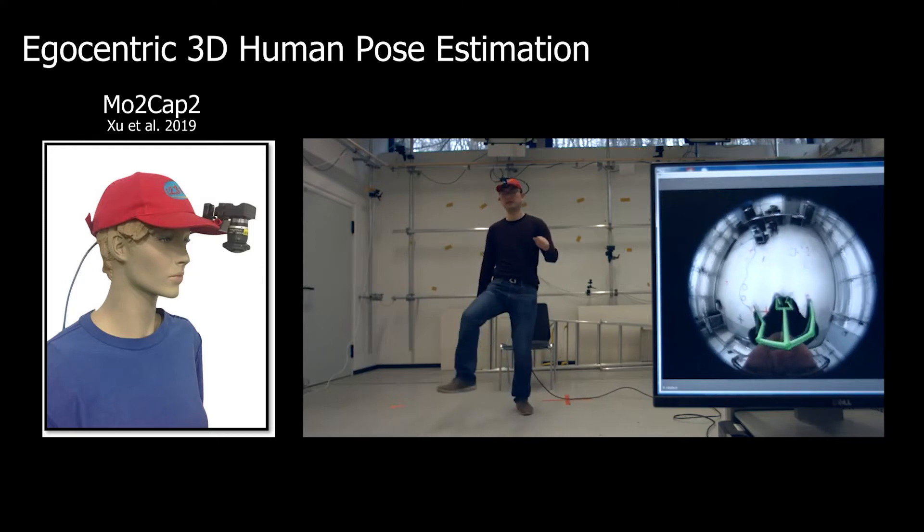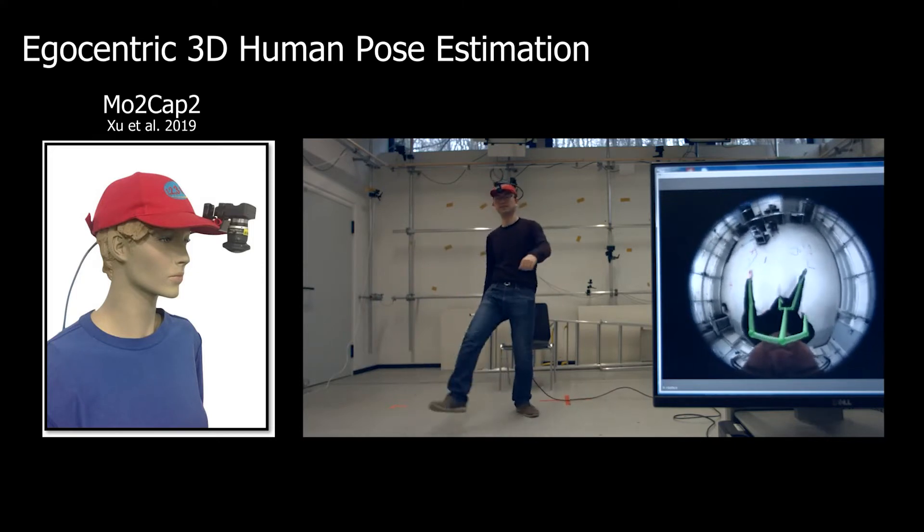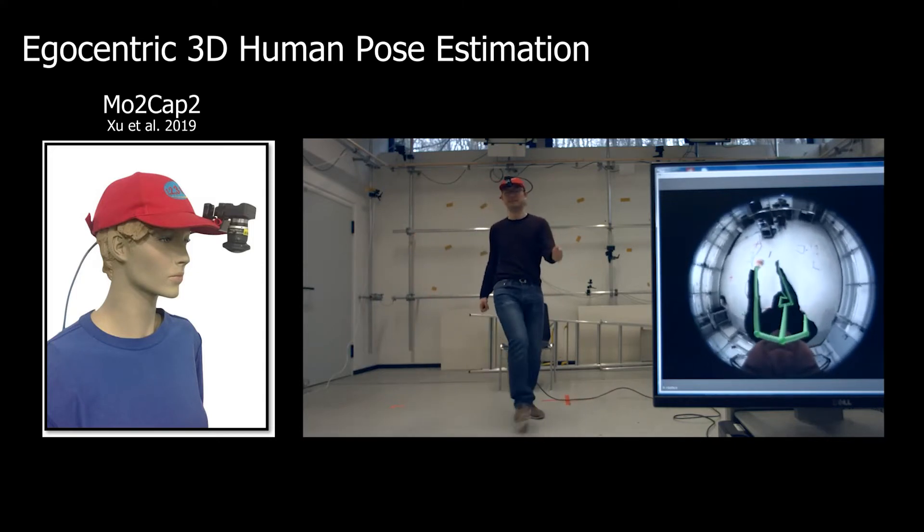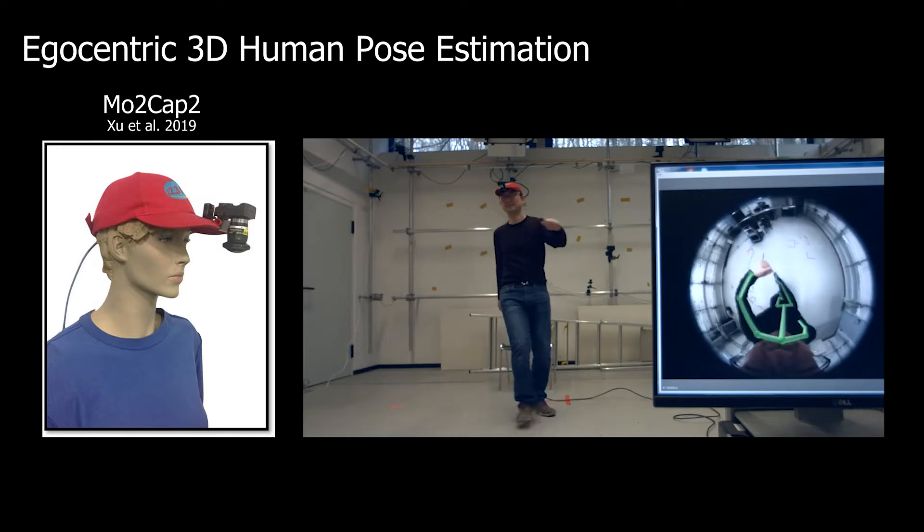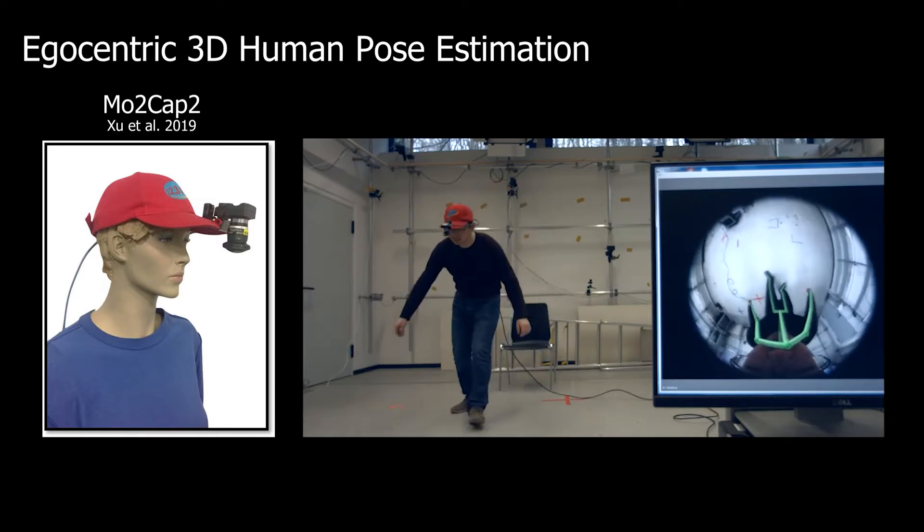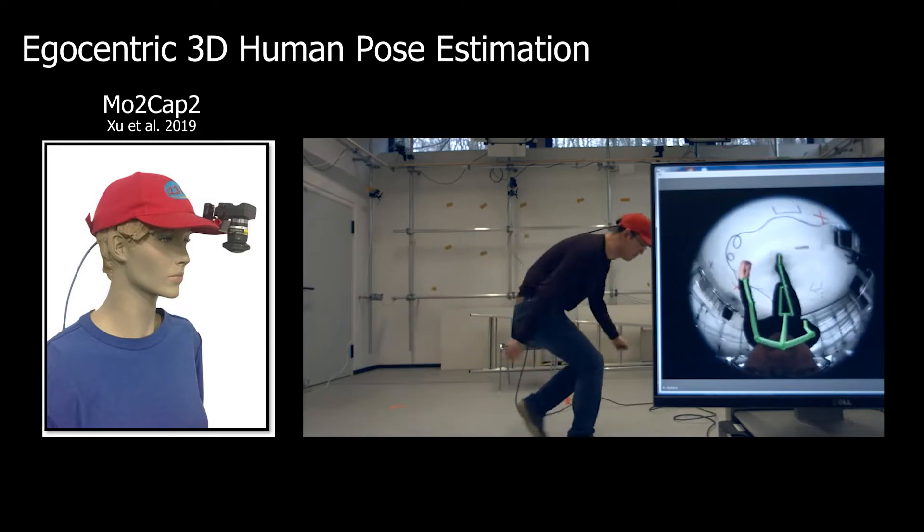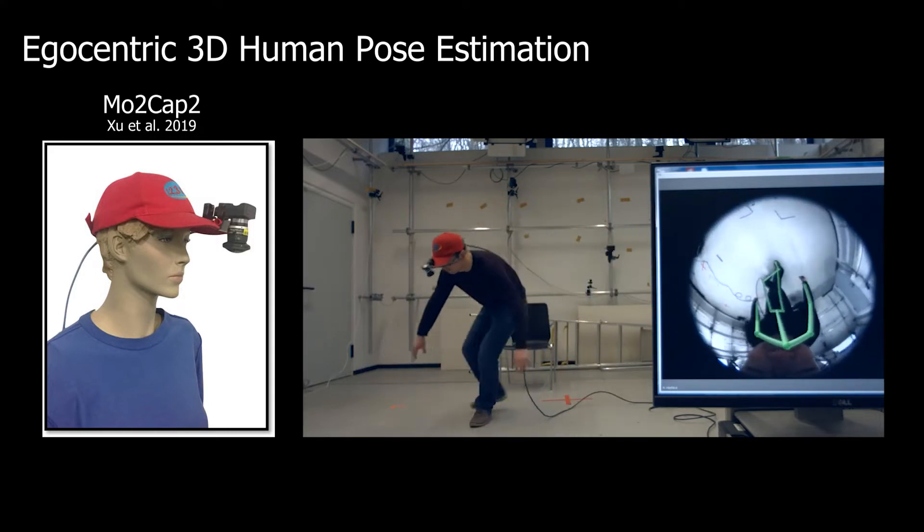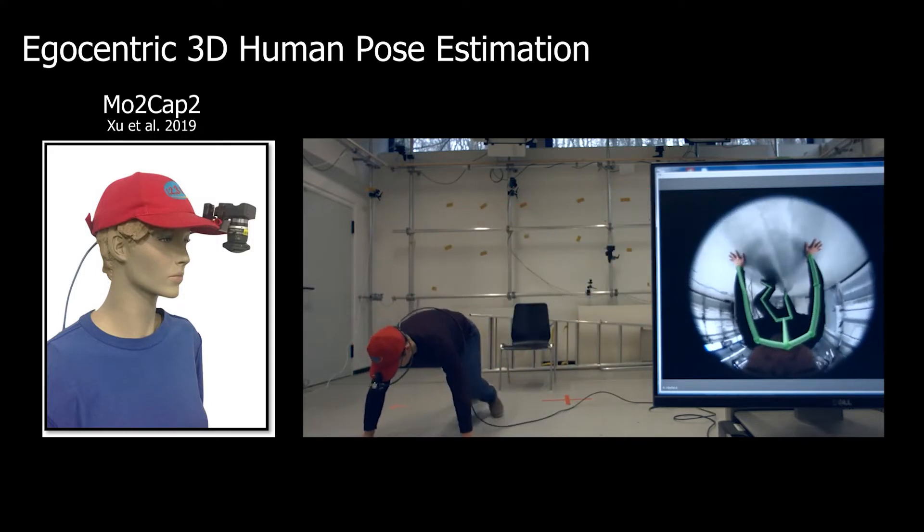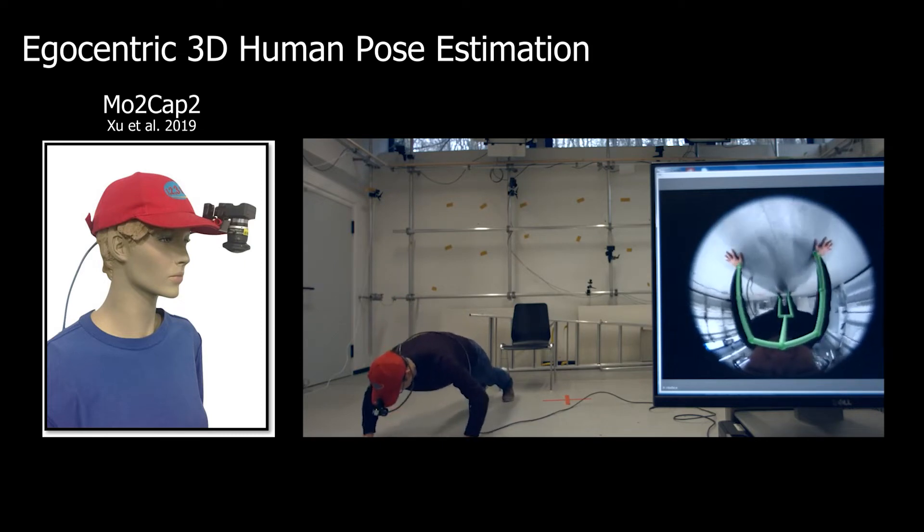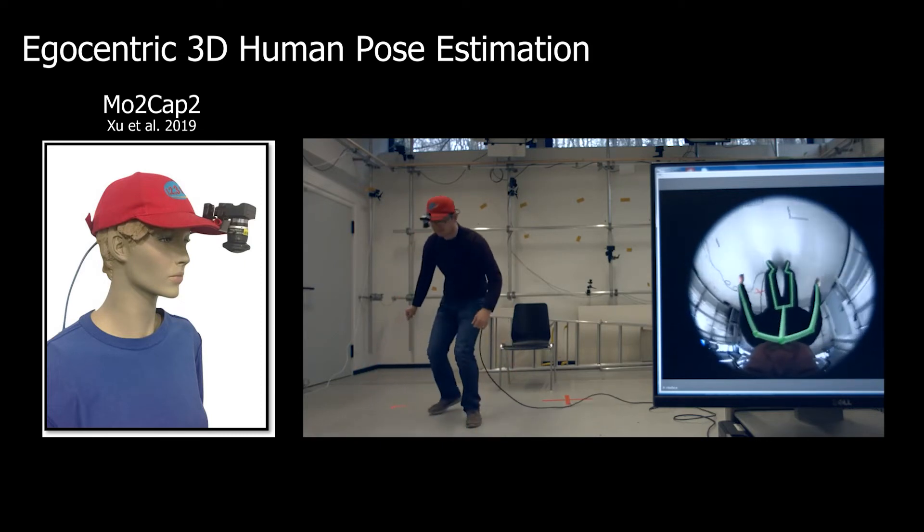Egocentric 3D human pose estimation has been actively researched recently. Compared to cumbersome motion capture systems that require fixed recording volume, the egocentric setup is more suitable to capture daily human activities in unconstrained environments. Example applications include XR technologies, motion analysis for sports and health, to name a few.